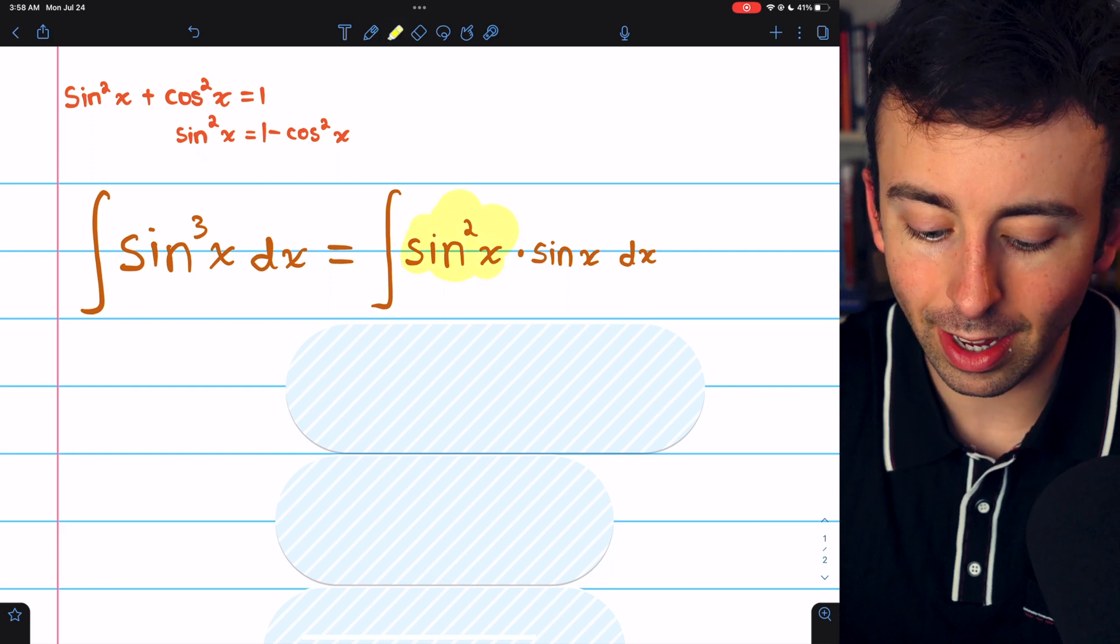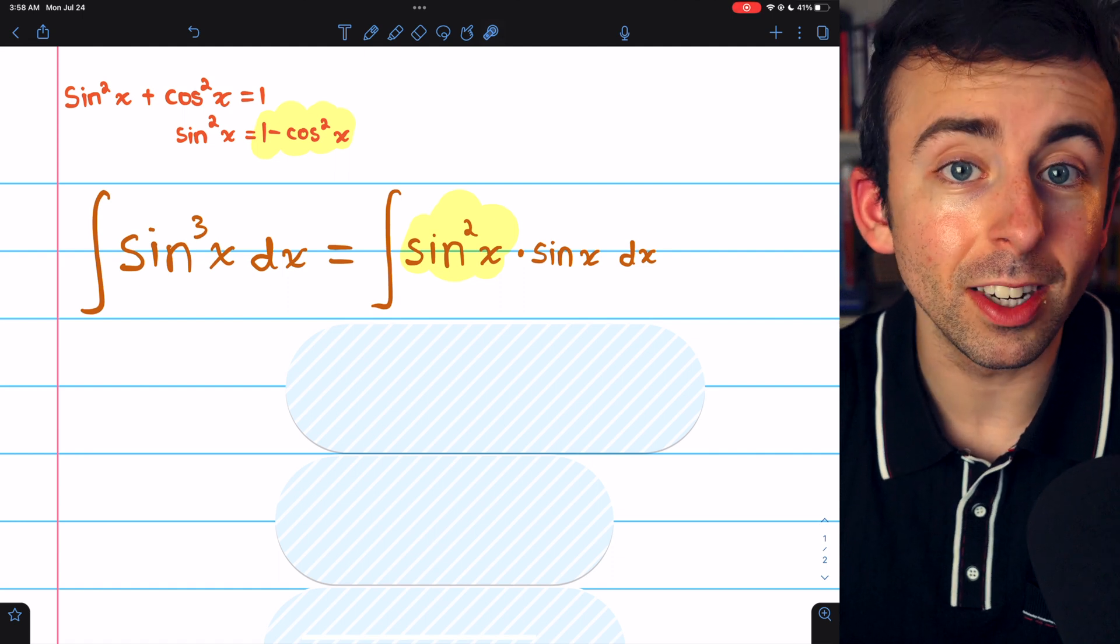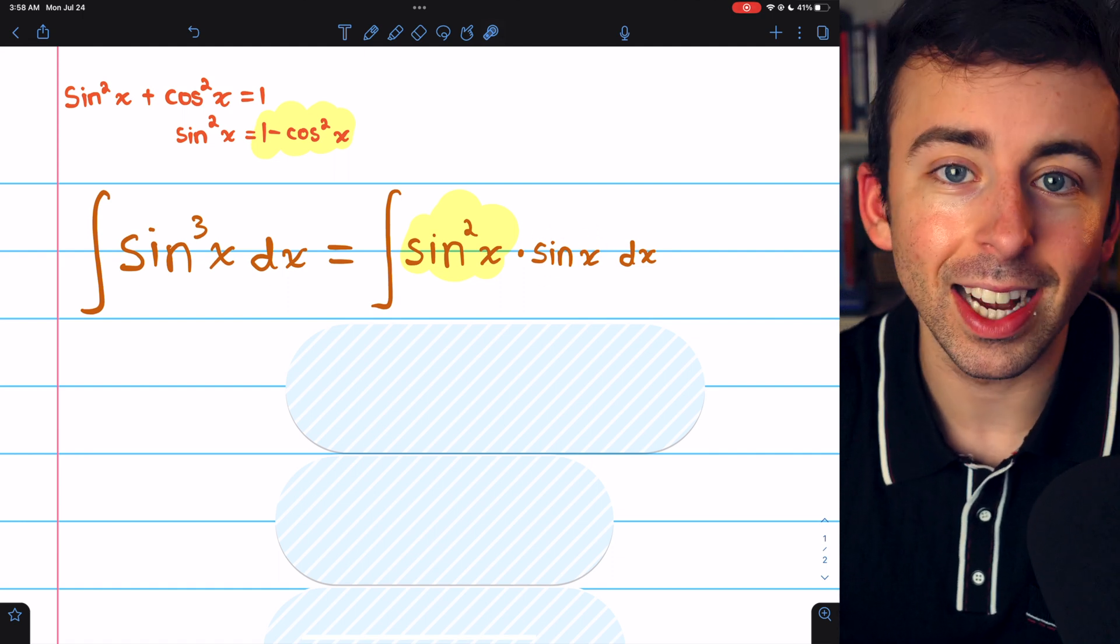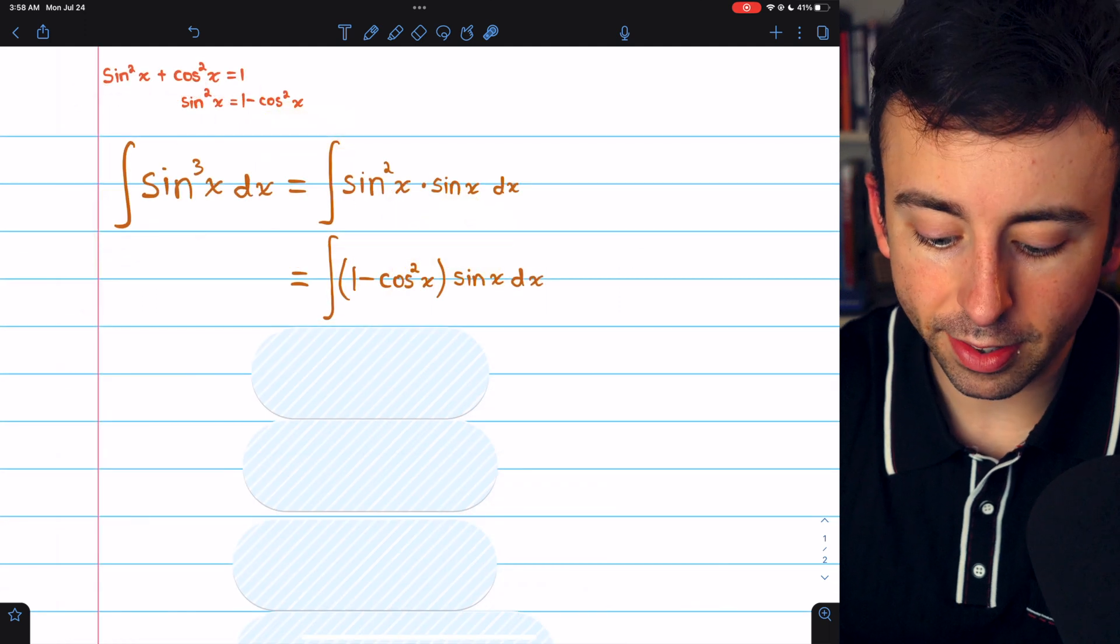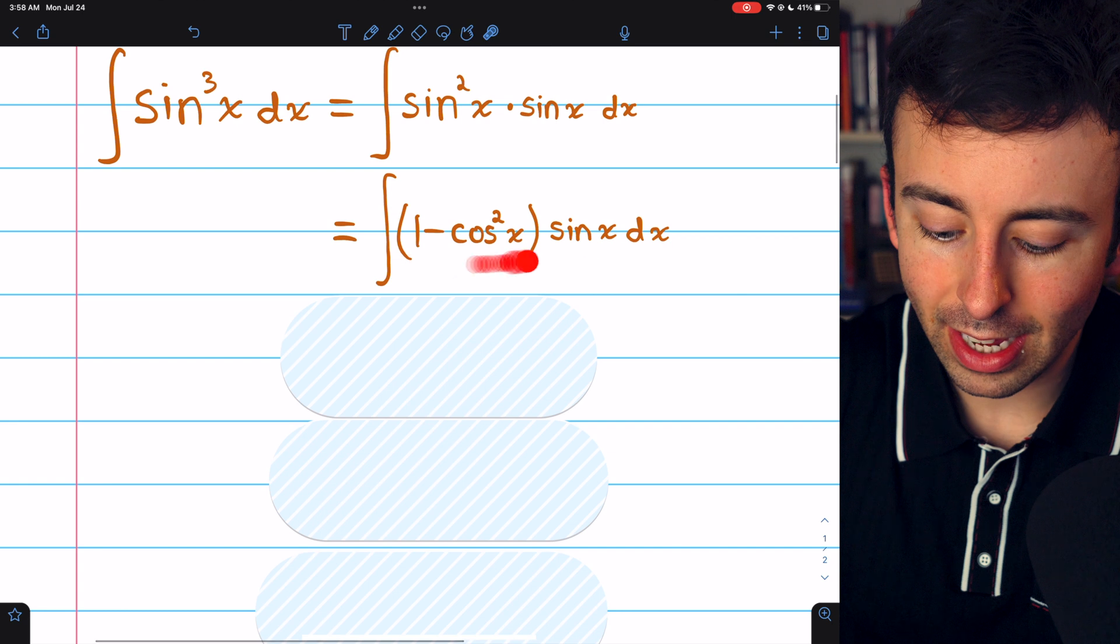So we'll replace this with this, and then we'll be able to use u substitution, which will clean up this one sine that we pulled out. Replacing this sine squared with one minus cosine squared gets us here.